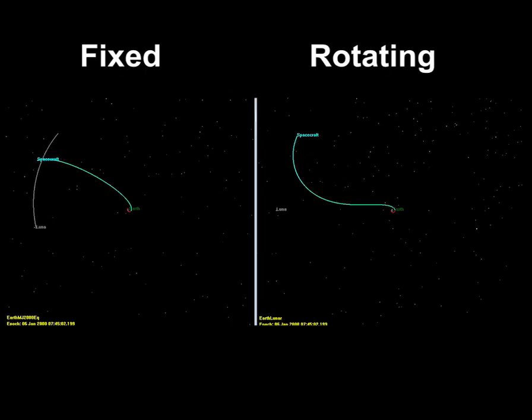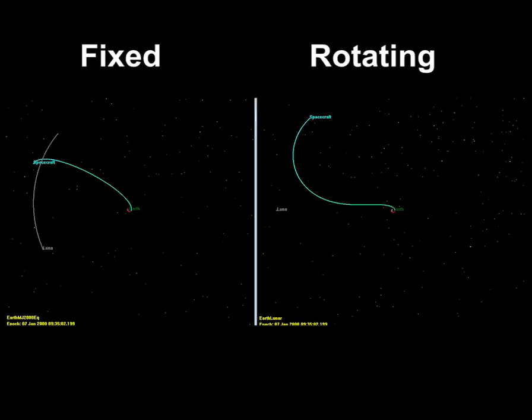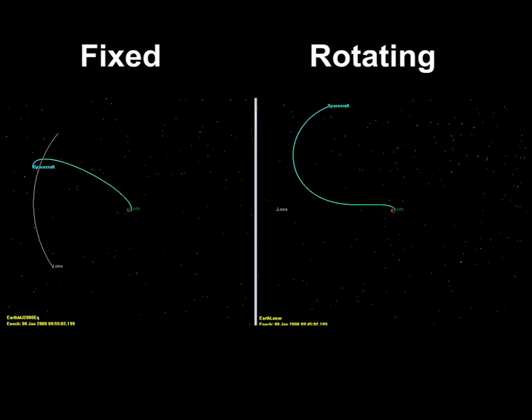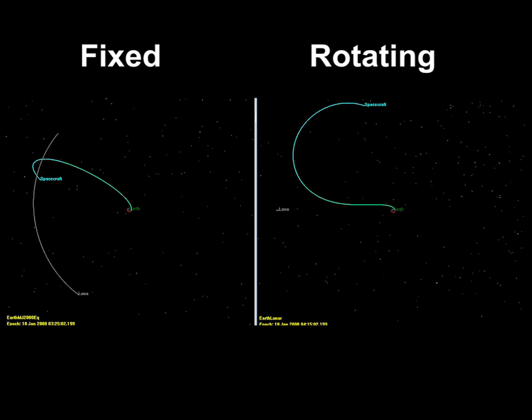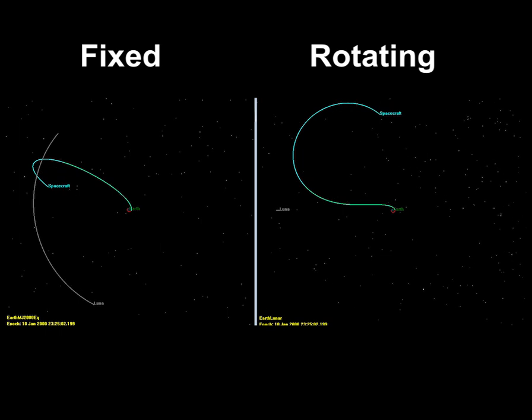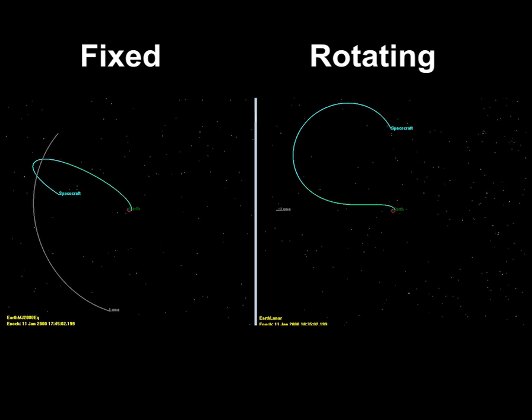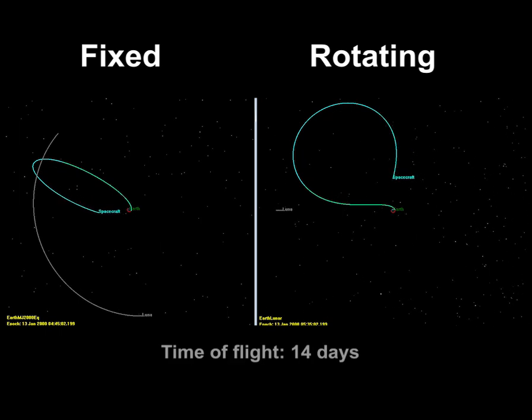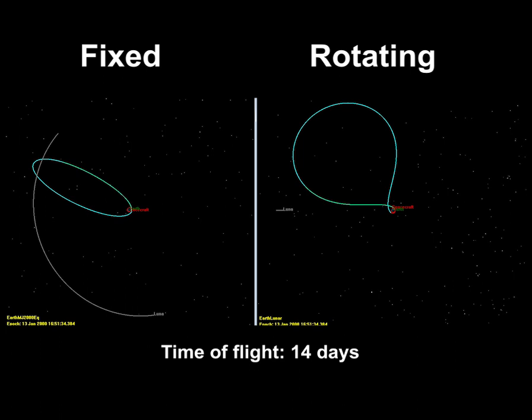The vehicle departs Earth, travels out beyond lunar orbit, and then falls back to Earth. Note the date of the return: without the perturbation from the Moon, the flight took 14 days instead of the free return's 10 days. So in a sense, the return was already free. What the lunar flyby got us was a free reduction in flight time and crew consumables.